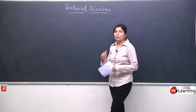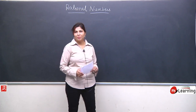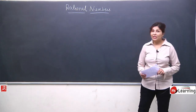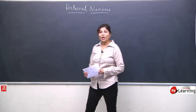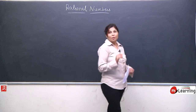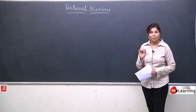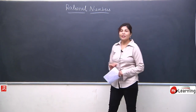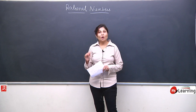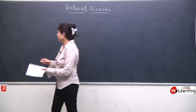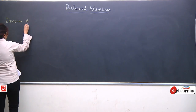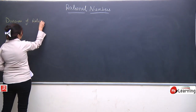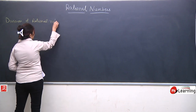To know more and more about rational numbers, humne itne questions abhi solve kiye, but definitely aap soch rahe honge ki maaam na division to liya hi nahi. We have 4 main important basic operations: plus, minus, multiply and divide. But we have not taken the sum of divisions. So today I am going to take the division of rational numbers — division of rational numbers.